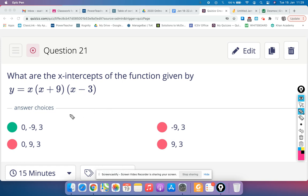So this question asks us for the x-intercepts. In other words, what values of x are going to make y equal to 0?